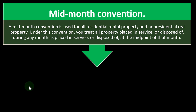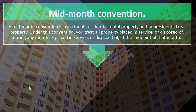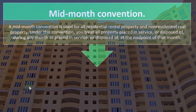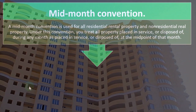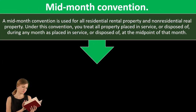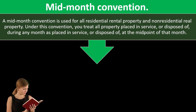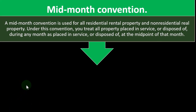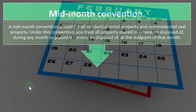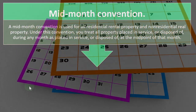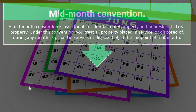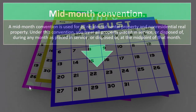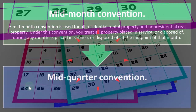Mid-month convention: a mid-month convention is used for all residential rental property and non-residential real property. If you're used to writing off things like equipment, those often use a mid-year convention. But when you get to something as large as real estate, it makes sense that the convention changes from mid-year to mid-month. Under this convention you treat all property placed in service or disposed of during any month as placed in service at the midpoint of that month.